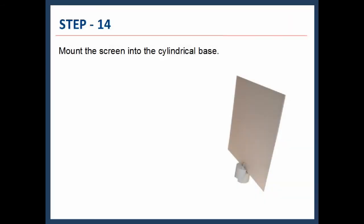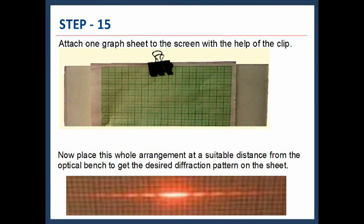Insert the single slit into the slot of the slit holder as shown. Now adjust the position of the single slit so that the laser ray falls normally on the slit. Mount the screen into the cylindrical base. Attach one graph sheet to the screen with the help of the clip.